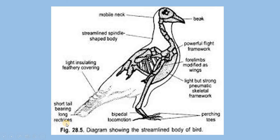The bird has a streamlined body with both ends pointed. There is a mobile neck with atlas vertebrae allowing birds to see 360 degrees around them — we humans can see only 180 degrees. Features include a streamlined body, powerful flight muscles, forelimbs modified as wings, a light but strong pneumatic bony skeletal framework, perching toes, bipedal locomotion, a short tail bearing long retrices, light insulating feathers — this is the clear morphology of the bird.